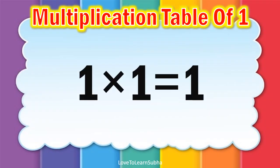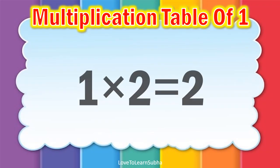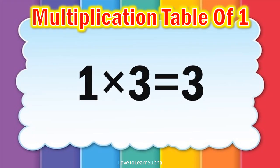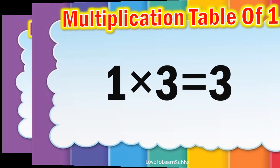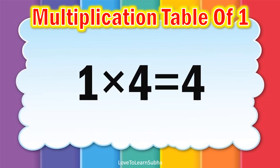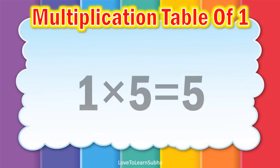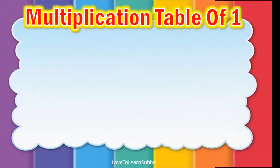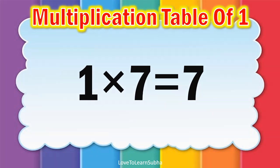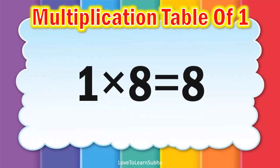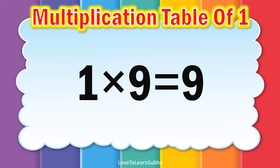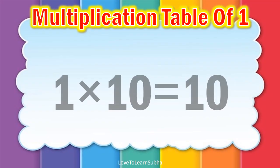1 1s are 1, 1 2s are 2, 1 3s are 3, 1 4s are 4, 1 5s are 5, 1 6s are 6, 1 7s are 7, 1 8s are 8, 1 9s are 9, 1 10s are 10.